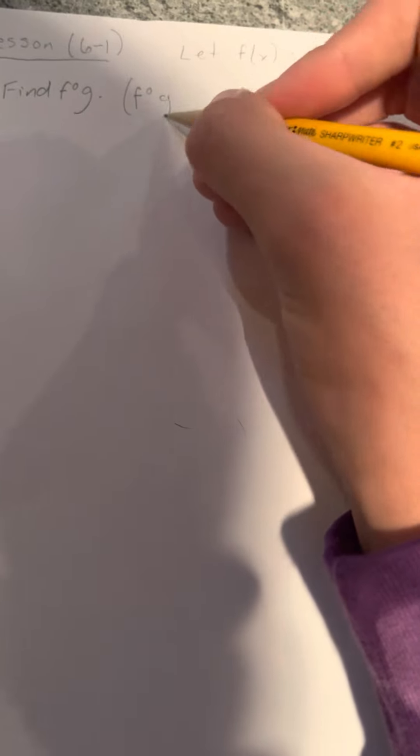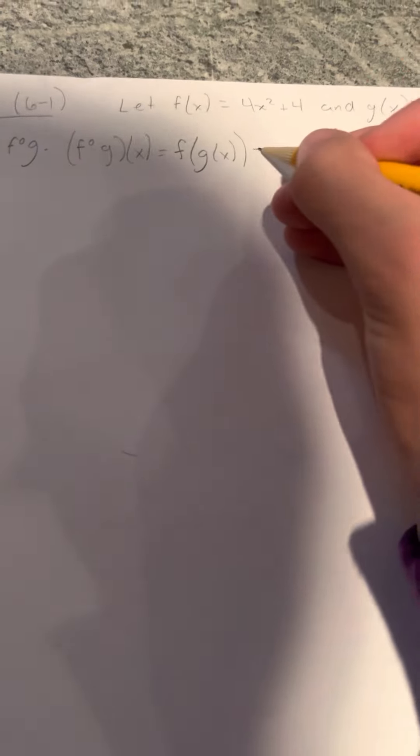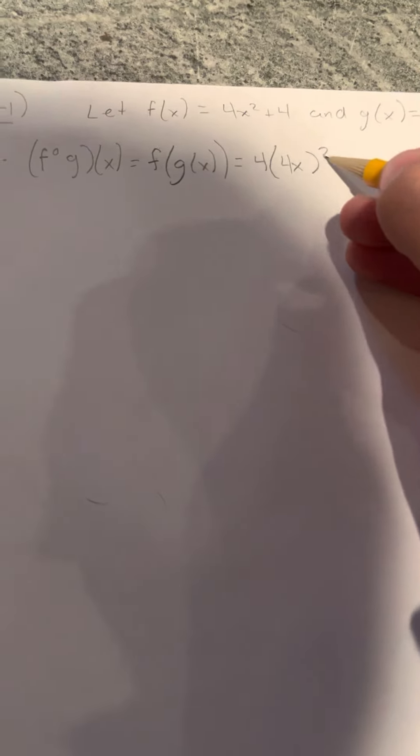To do this, we put in parentheses: (f∘g)(x) equals f(g(x)). So f is on the outside. Since g is on the inside, you take 4x and bring it down, so it would be 4 times (4x), then you have to square it. So it's 4 times (4x) squared, plus 4.